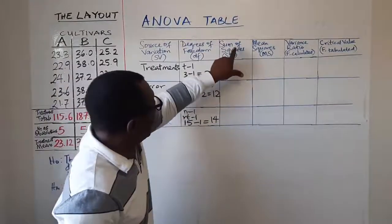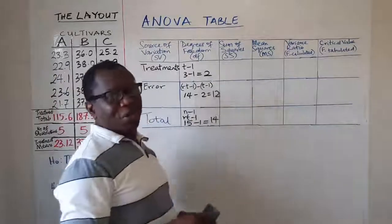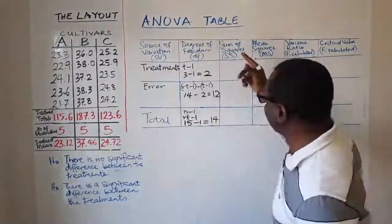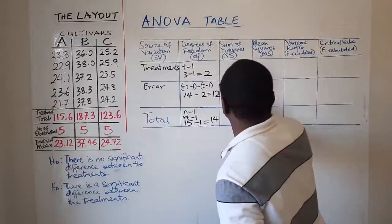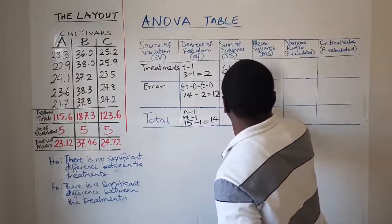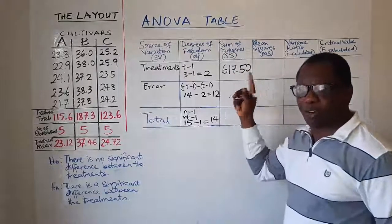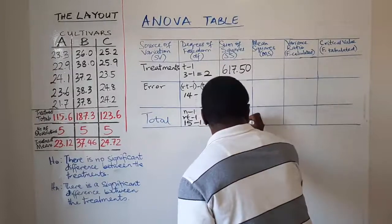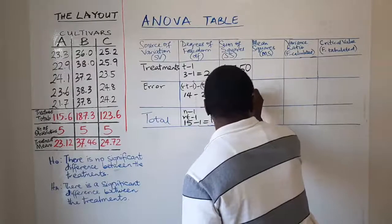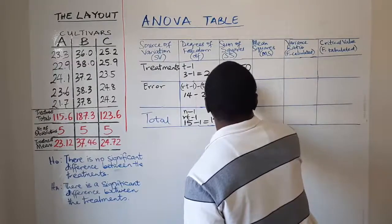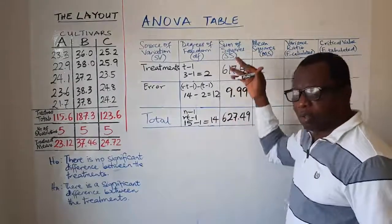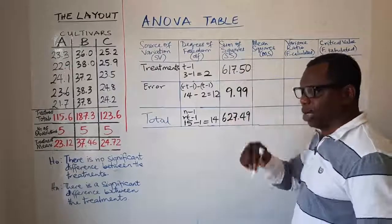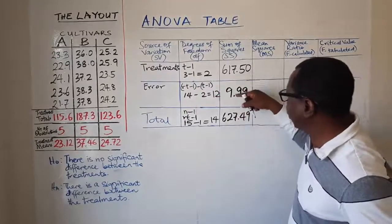In the last video we computed the sum of squares. So all you need to do is the values you got from those computations, you just bring them here. So here we got 617.50 if you recall from the last calculation we did and we got 627.49 and here we got 9.99 from previous computations. So in case you didn't watch that last video you have to go back to it so that you understand how we computed all these values.